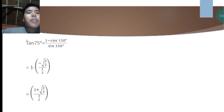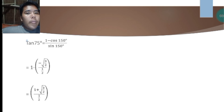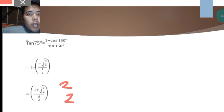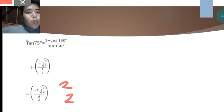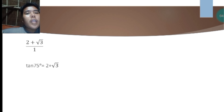To simplify that expression, we multiply both the numerator and denominator by 2, because we have 1/2 in the denominator. Based on the rule, you find the reciprocal of 1/2, which is 2, and multiply it through. Multiplying 1/2 by 2 gives 1 in the denominator, and 2 times (1 plus square root of 3 over 2) gives us 2 plus square root of 3.